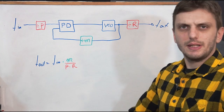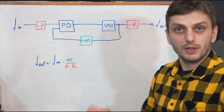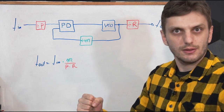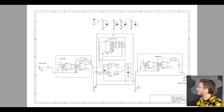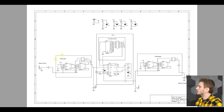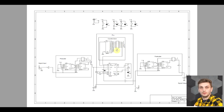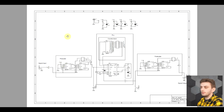Looks a bit complicated — let's see if this actually works on a practical board. The circuit I will be working with today has three main blocks: a pre-scaler, the PLL, and the post-scaler. And then inside the PLL, there is also an internal division counter block.